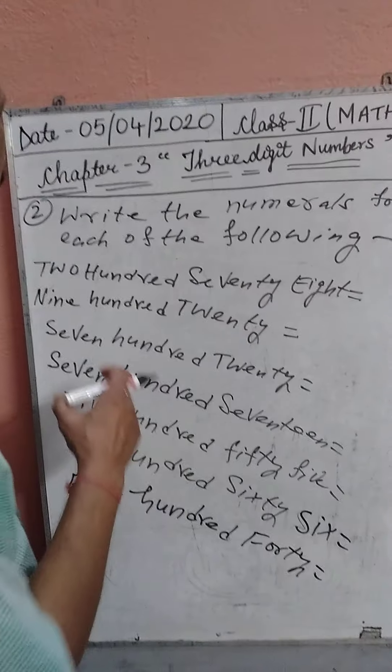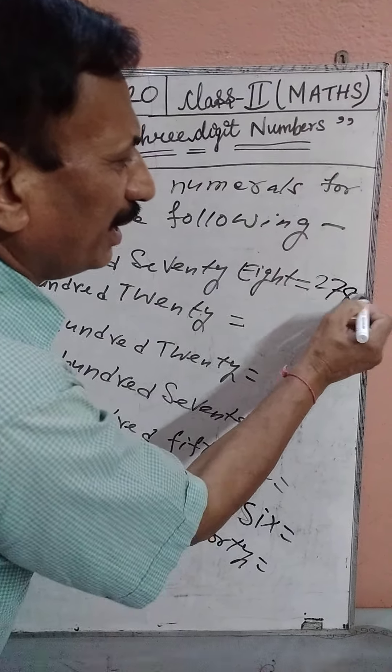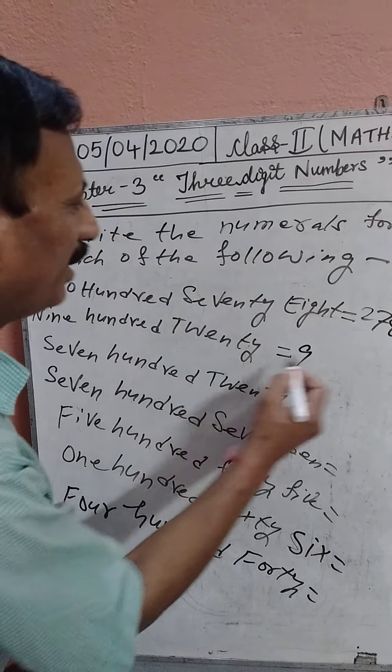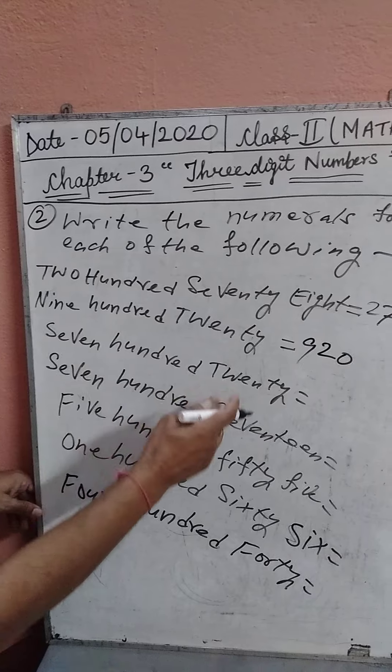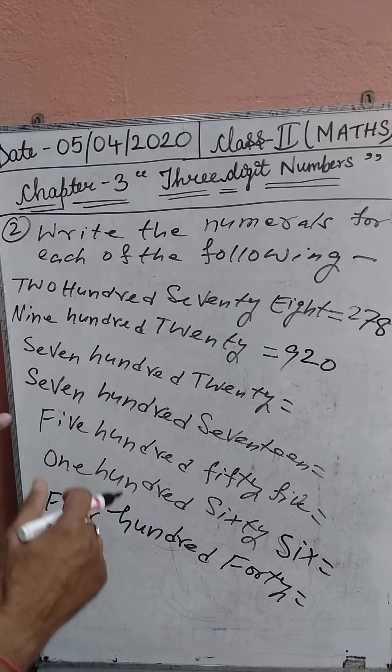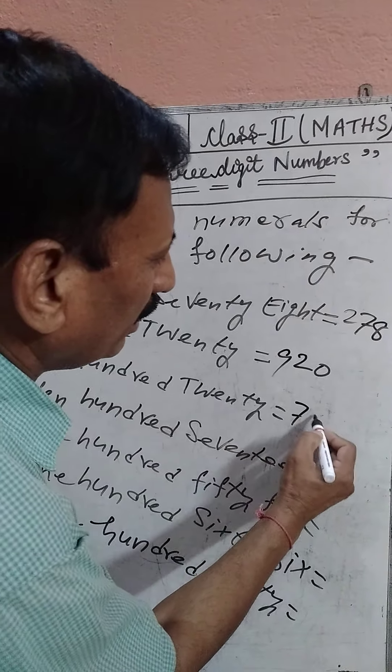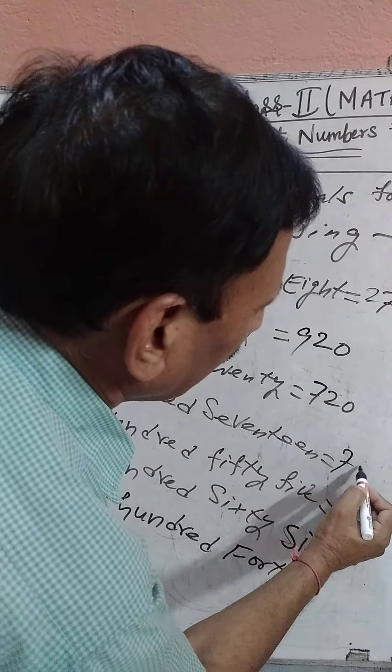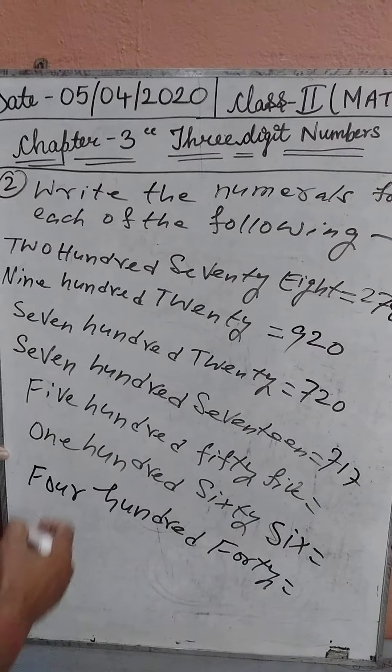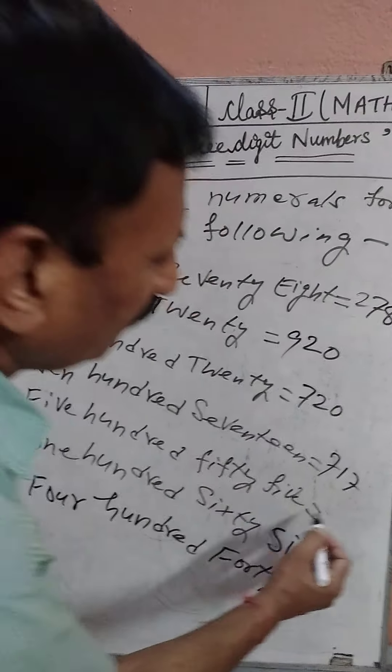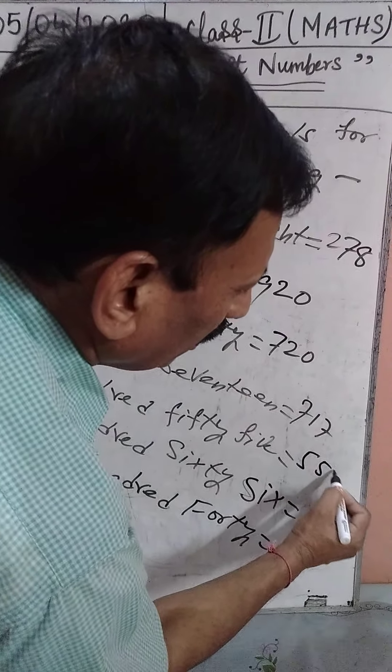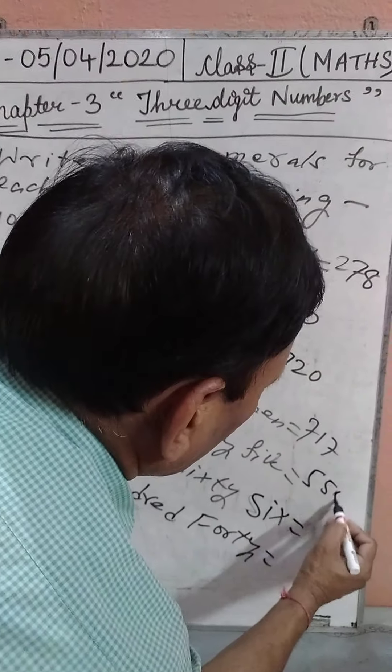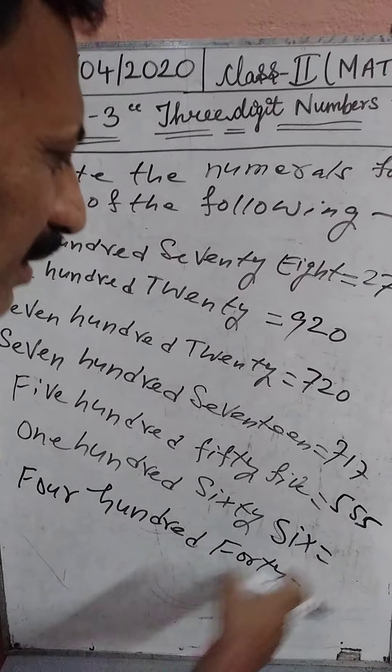278, we write 278. Next, 920. Next, 717. Next, 555. 155.